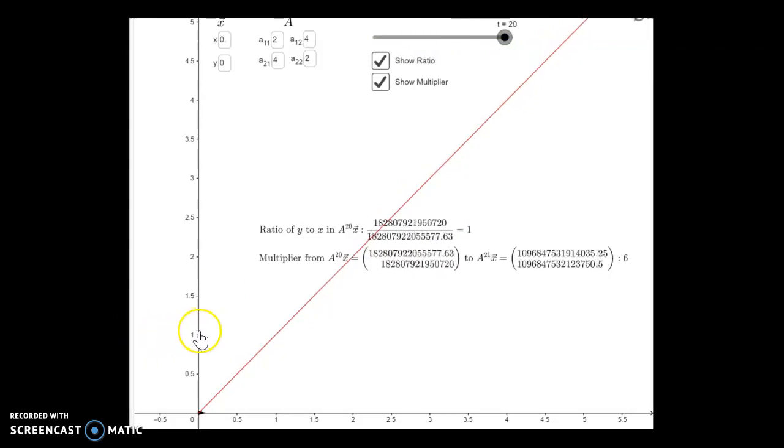And look at this, the components, the rise to run of this vector is about one to one. In fact, A to the 20th, there's that number that we saw in the document. Comparing A to the 20th, which is, those are the two components. You can see how very, very close they are. They're off by about three. They're off by a little bit more than three units, but these numbers are really massive.